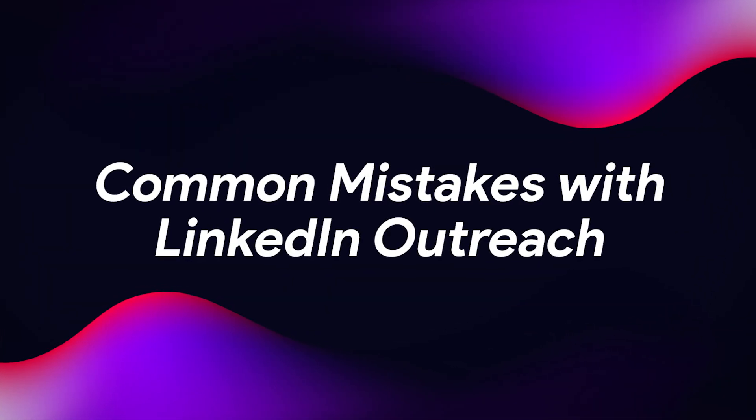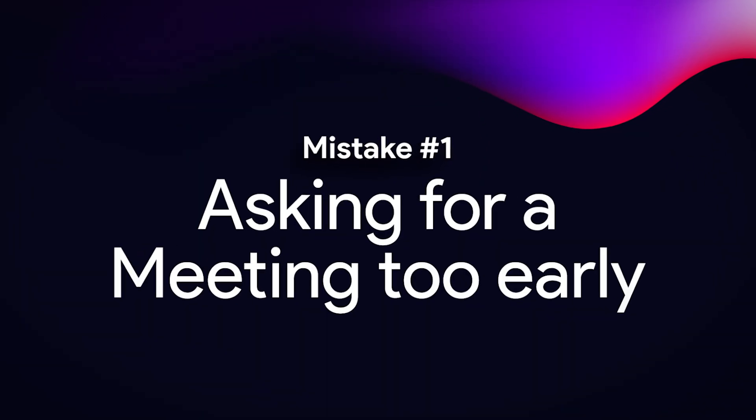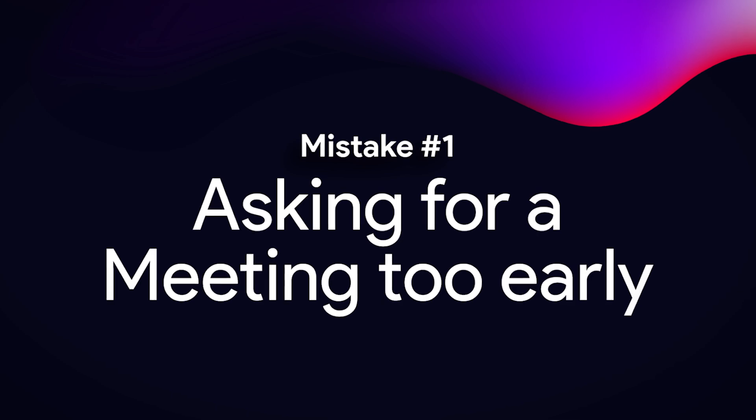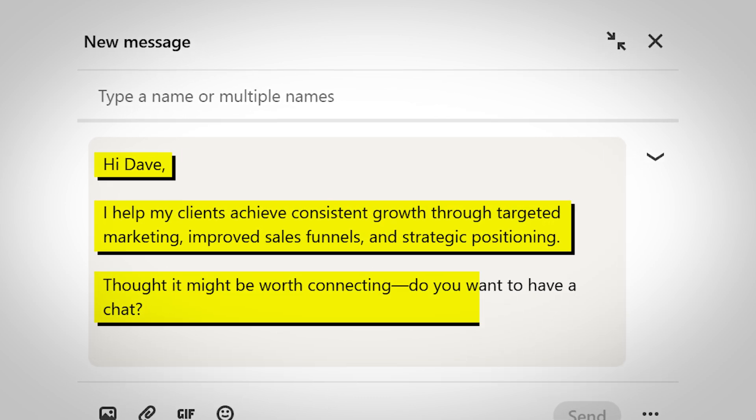There are a few mistakes I see with LinkedIn outreach and automation that I want to tell you about before you make them. The first is trying to ask for a meeting in the first message — saying something like 'hey I help my clients do XYZ, do you want to have a chat?' That is far too aggressive and presumptive. You're presuming the prospect is open to buy right now and that they even care about what you're saying.